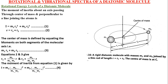Hello friends, today we will start rotational and vibrational spectra of a diatomic molecule. Molecular energy states arise from the rotations of a molecule as a whole, vibrations of atoms of a molecule with respect to each other, and from changes in the electronic configuration of the molecule. Here, we will consider the rotational and vibrational energy states of the diatomic molecules.